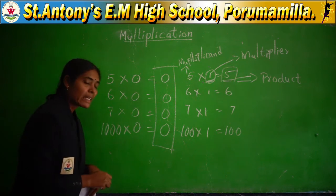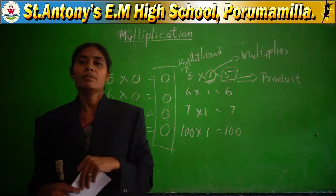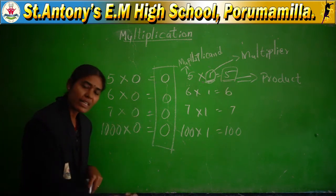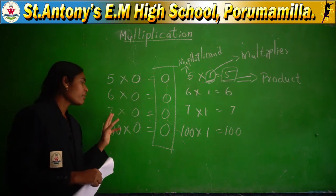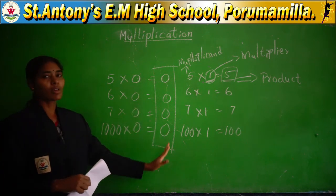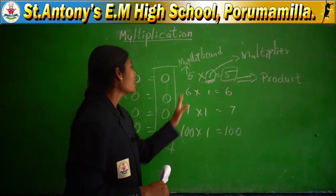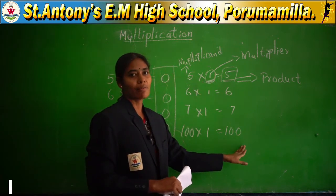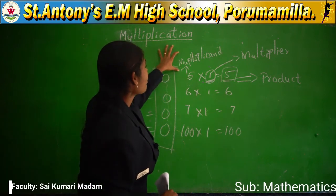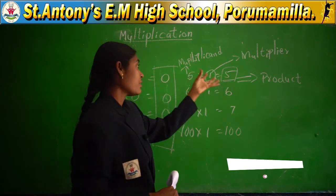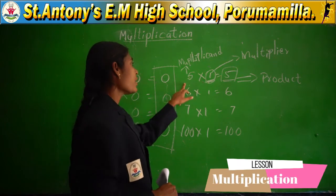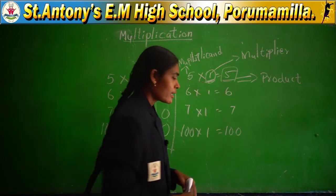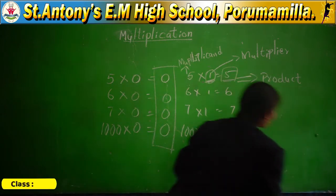And one more point to remember: repeated addition is also called multiplication. Multiplication is quicker than repeated addition. If you multiply with 0 you get 0. If you multiply with 1 you get the same number itself. In multiplication, the first number is the multiplicand, the number you multiply by is the multiplier, and the final answer is the product. These are the main rules in multiplication.